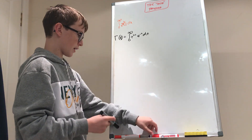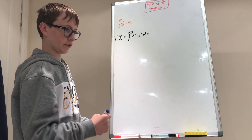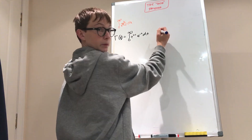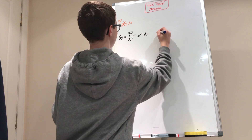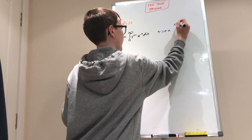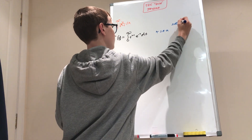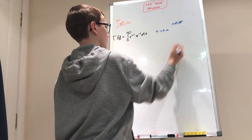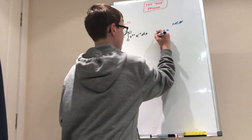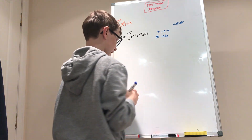So now, using a kind of u substitution: let t equal to n times u, for n an element of the natural numbers. So dt equals n du.